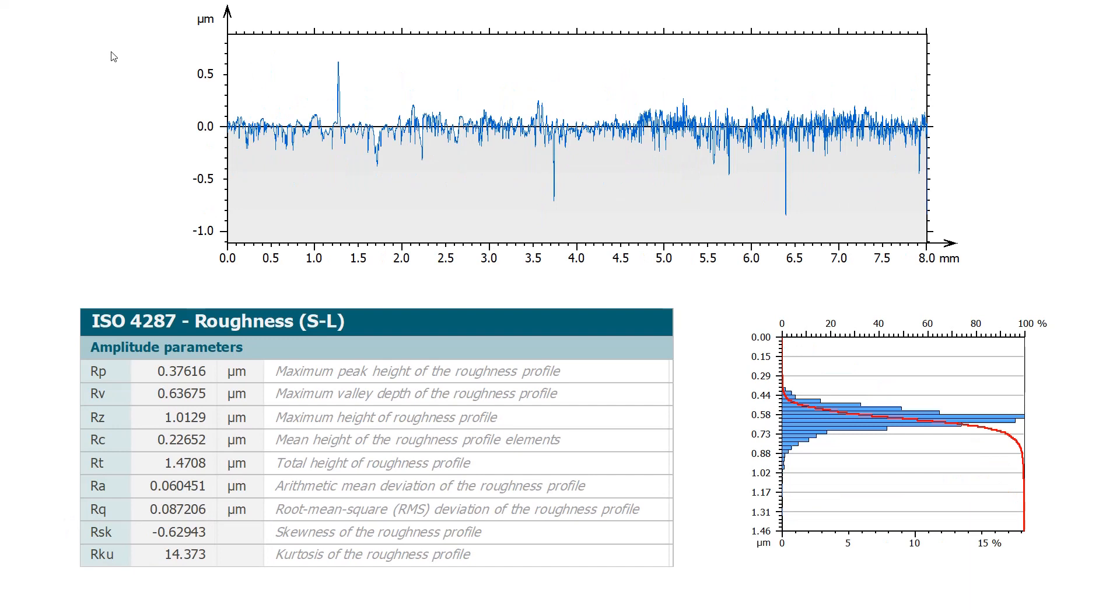Last example, measured on a ground surface. The distribution shows a nice Gaussian shape, slightly shifted towards the top because of a few deep grooves. Thus, the value of RSK which is slightly negative and a large value for RKU. The mean value, RA, is very small compared to the peak to valley of RT. All these parameters can be used in specification.